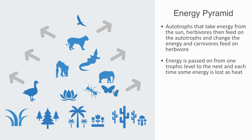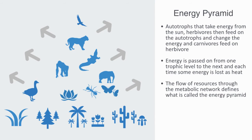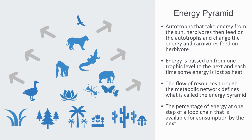This is due to the fact that each organism must use some energy that they receive from other organisms in order to survive. The flow of resources through the metabolic network defines what is called the energy pyramid. The efficiency with which energy or biomass is transferred from one trophic level to the next is called the ecological efficiency. The percentage of energy at one step of a food chain that is available for consumption by the next step is called the food chain efficiency. It is calculated as the energy in the food minus the energy used for respiration, and is approximately 10% to 50%.